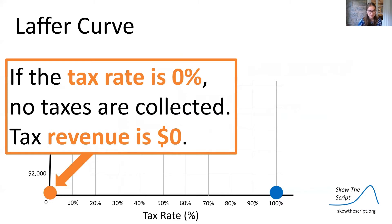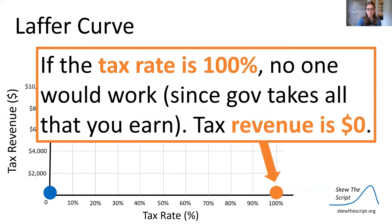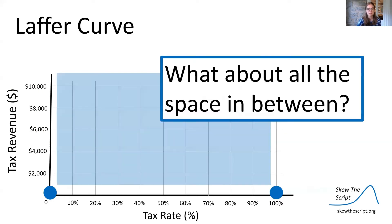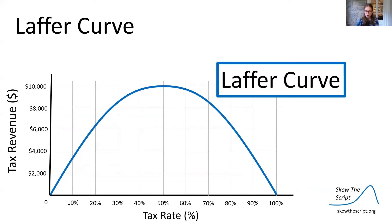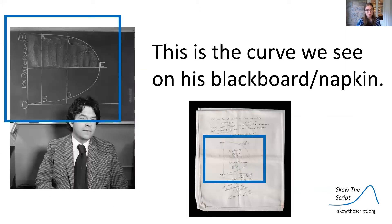Yes, we know two points. If the tax rate is zero percent, no taxes are collected — the tax revenue is zero dollars. Similarly, if the tax rate is 100 percent, no one would work because the government takes all that you earn, and again the tax revenue is zero dollars. But what about all the space in between? That's where our Laffer curve comes in. We can see that this is the curve on the blackboard and on the napkin, just sideways.